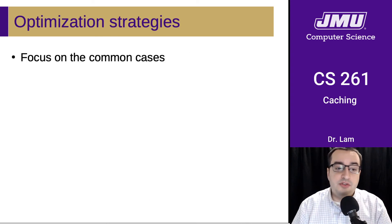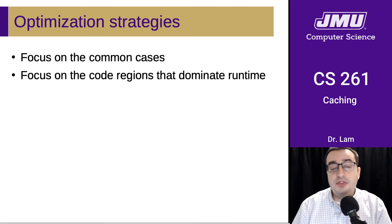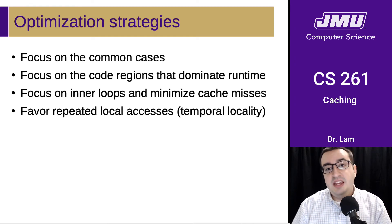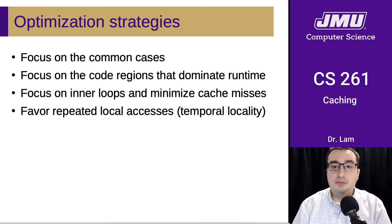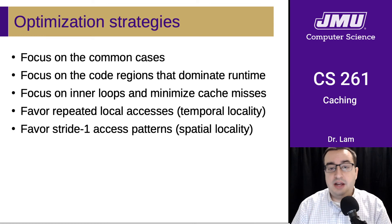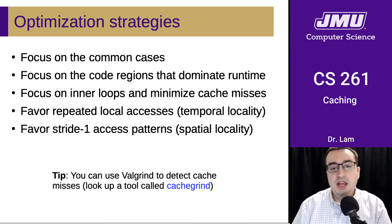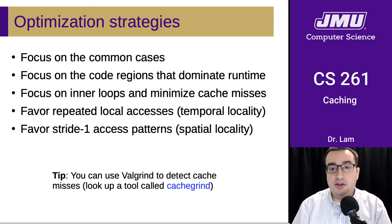General optimization strategies: focus on the common cases and the code regions that dominate the runtime. Focus on inner loops, because those are executed the most, and try to minimize cache misses during those inner loops. Favor repeated local accesses — try to access the same things over and over again — which improves temporal locality. Try to favor stride-one access patterns to take advantage of spatial locality. There is also a tool called Valgrind that we've been using for memory leak checks; it can also detect cache misses via a tool called CacheGrind.